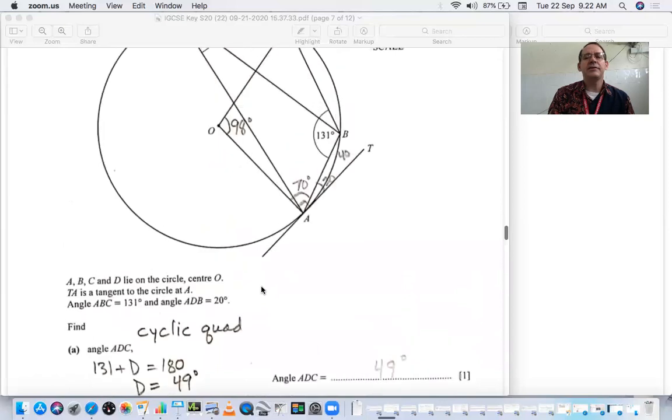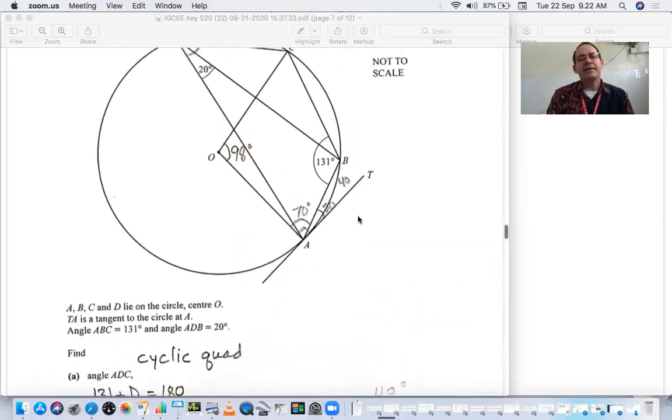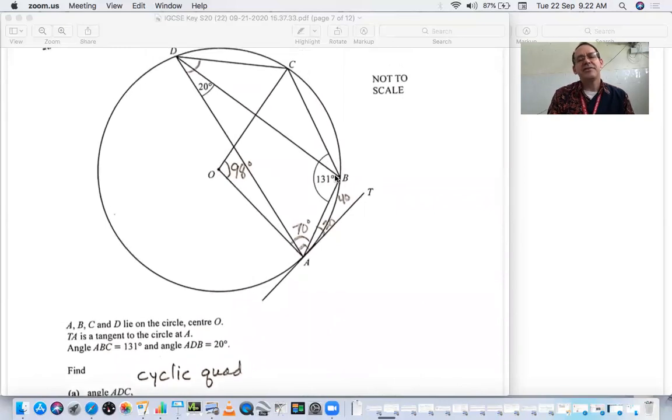Angle BAT. Here's BAT and BAT has the same connecting points on the circle B and A as this 20 degrees. So BAT is actually an extended inscribed angle because the vertex is on the edge of the circle, but it's extended to the tangent and A is the tangent point. Since this inscribed angle and this inscribed angle have the same connecting points, the A and B, then they're the same. So that's 20 degrees.